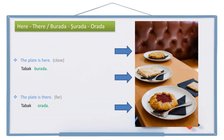How about this plate? This plate is not so close to me, but also it's not so far from me — it's a bit far. The plate is still there, but not far, just a bit far. In Turkish: tabak şurada. So if I'm talking about something close to me, I use burada. If it's far, I use orada. And if it's not so far and not so close, I use şurada.